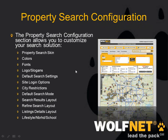The property search configuration — there's actually another webinar that goes over all of these in greater detail, so check out our website for those. But basically the configuration options are skin, colors and fonts, logos, slogans, default search settings, site login options, restricting cities that you don't want to show up on your IDX if you don't service them or they're too far out of your area. There's also the default search mode — if you have the map feature, you can choose if you want it to come up in map view or just the regular form view.